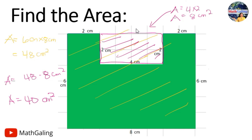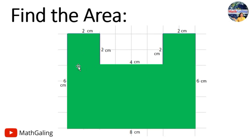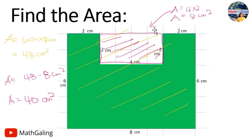It doesn't matter how you divide the original figure — all three methods give the same answer. Just be careful with your measurements when cutting polygons, and make sure to adjust the side lengths accordingly. The total area of this figure is 40 centimeters squared.